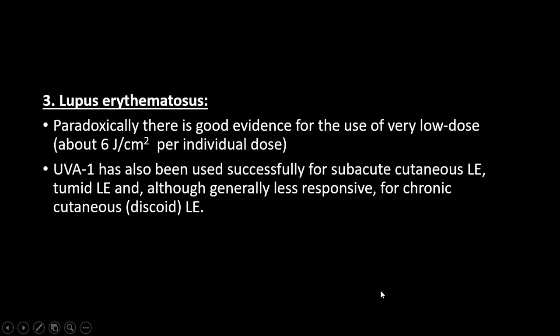Paradoxically, there is good evidence for use of very low dose UVA-1 — 6 joules per centimeter squared per individual dose. UVA-1 is successfully used for subacute cutaneous lupus erythematosus and tumid LE, but it is less responsive in chronic discoid lupus (CDL). UVA-1 at a medium dose is shown to be superior to narrowband UVB, or even low dose treatment can be effective although a prolonged treatment course may be needed.